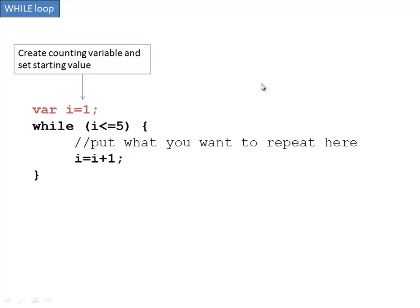I'm going to be talking about a while loop. A while loop is another type of loop that JavaScript uses, and it is a loop that will continue to run as long as the condition that's specified is true.